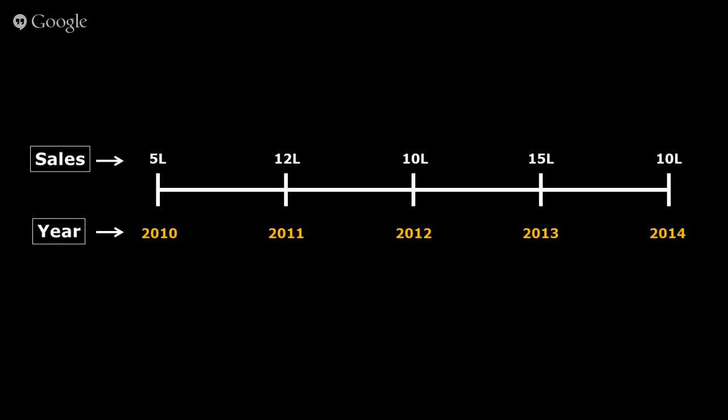Looking at these various sales figures, we can compare sales of two different years and see whether sales have grown or dipped. Between 2010 and 2011, sales grew by 7 lakh — from 5 lakh to 12 lakh — which is equivalent to a 140% increase: the growth amount of 7 lakh divided by the initial sales of 5 lakh. Similarly, we can get the percentage growth or dip for the remaining time intervals.